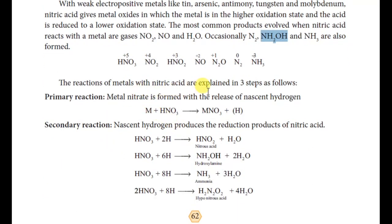The reaction of metals with nitric acid is explained in three steps. First is the primary reaction: the metal reacts with nitric acid to give metal nitrate and nascent hydrogen.